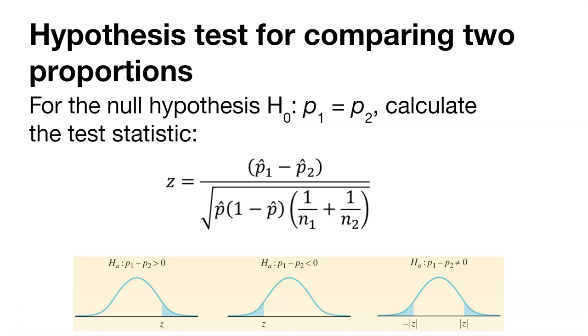After we find that pooled sample proportion, we can then calculate the test statistic, and then we can compare this to a value we might find in our Z table to say something about this hypothesis test for comparing two proportions.